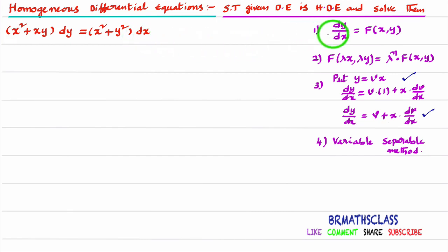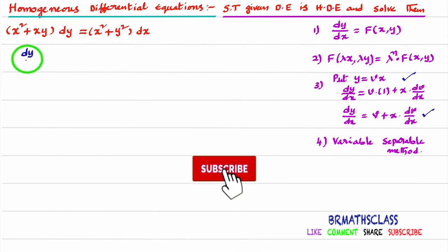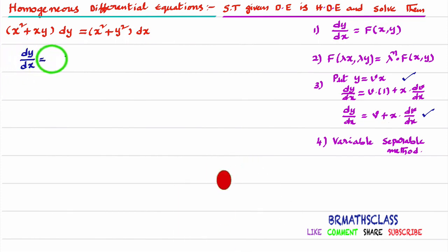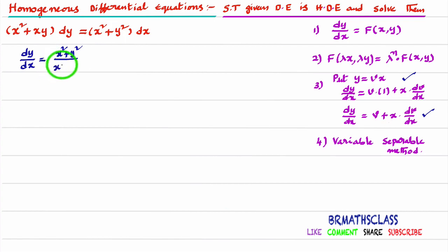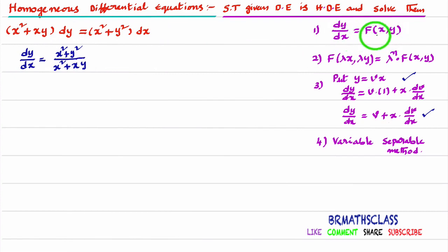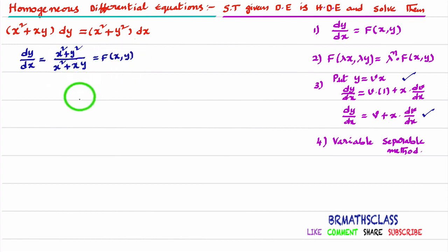For that, I will write the given differential equation in the form dy/dx = f(x, y). Taking dx to the other side, you get dy/dx = (x² + y²) / (x² + xy). This is a function in x and y. So I have written the given differential equation in the form dy/dx = f(x, y), where f(x, y) = (x² + y²) / (x² + xy).